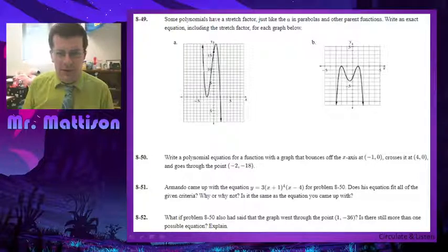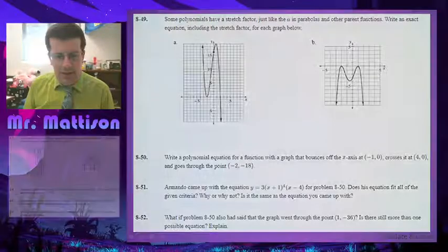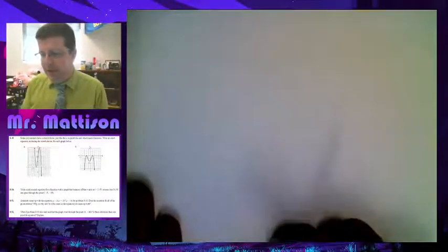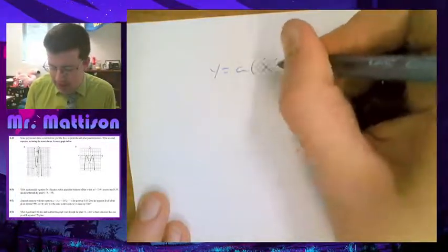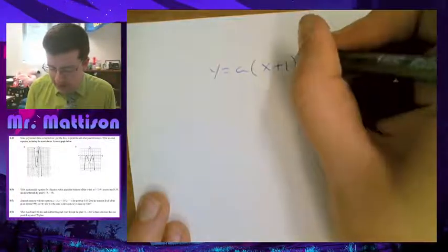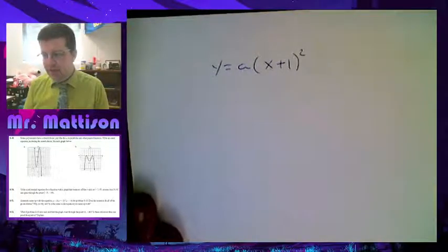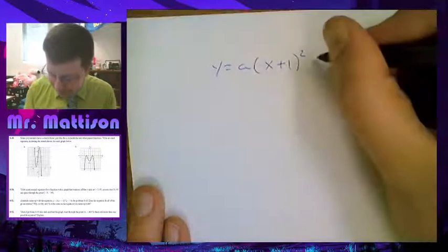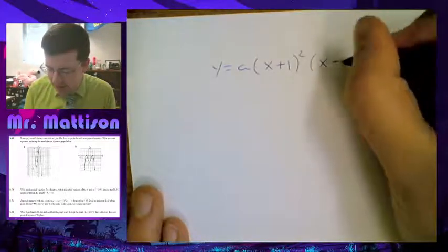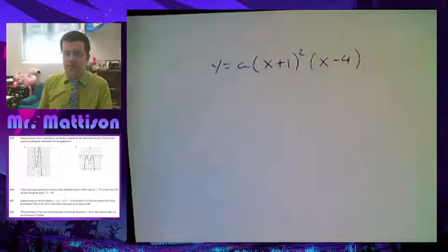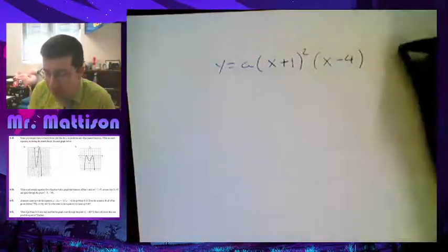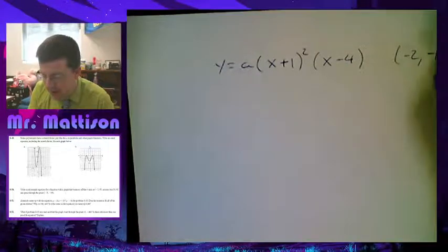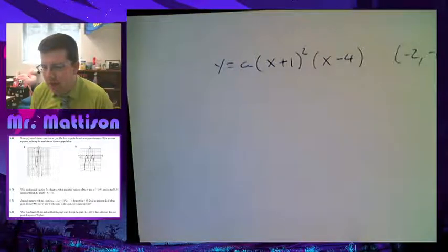Okay. So, we're going to take a look at number 50. Because if you can do 50, then you can do all of them. So, we know that we bounce off the x-axis at negative 1. Meaning that I have to have y equals a times x plus 1 squared. Because I bounce off it. And I cross at 4. Which is going to be x minus 4. So, that's probably the equation that you came up with. Now, I'm also told that I go through the point negative 2, negative 18.